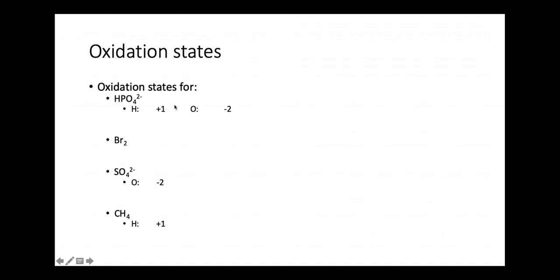We have four practice situations. For HPO4²⁻: H is plus 1, O is minus 2, so 4 oxygens give minus 8. Adding H gives minus 7, and with an overall charge of minus 2, P must be plus 5. For B as a pure element, the oxidation number is just zero.